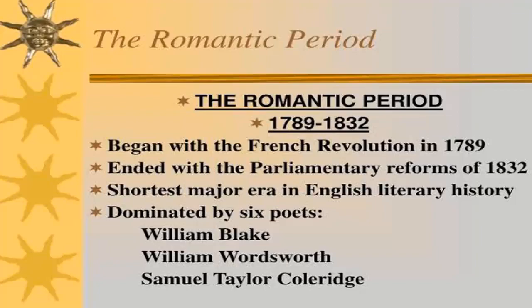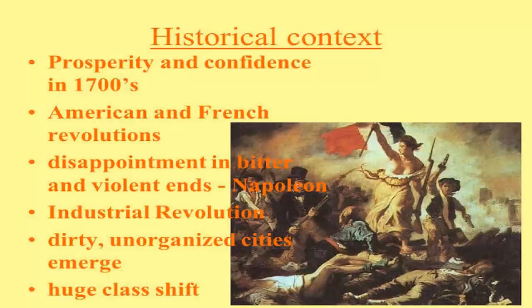The German poet Friedrich Schlegel was credited for first using the term 'Romantic' to describe literature. He defined it as literature depicting emotional matter in an imaginative form. Imagination, emotion, and freedom are certainly the focal points of Romanticism.